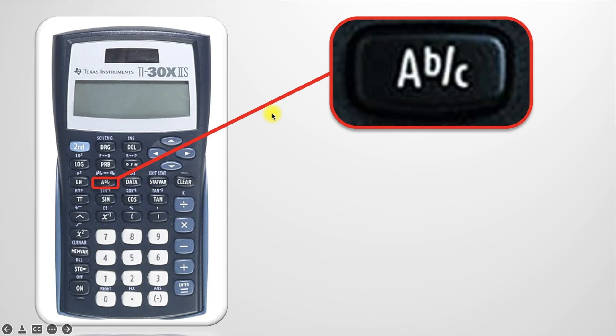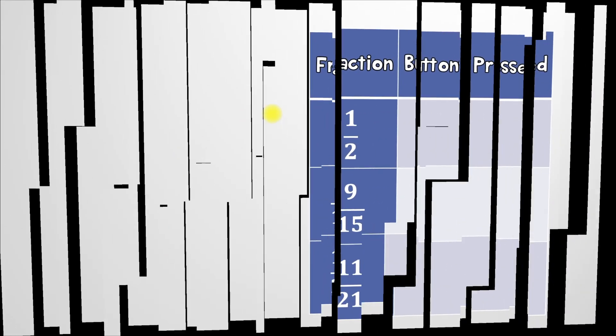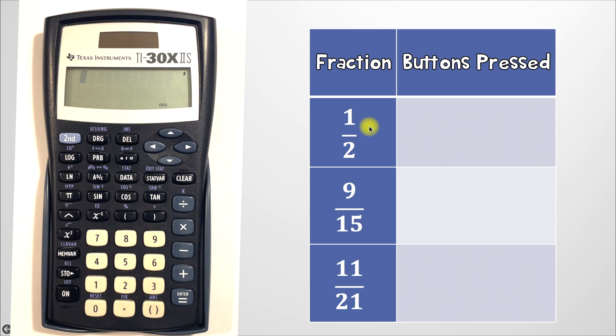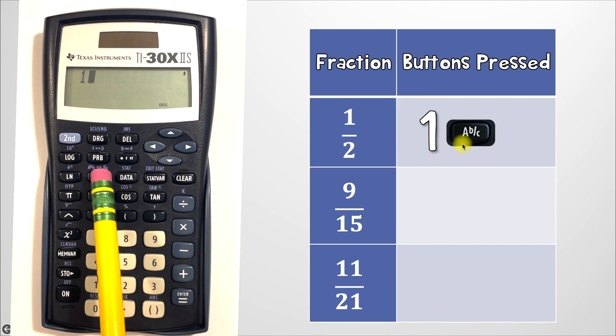So let's go over our first three examples. Let's go over this first example here 1 over 2. Since 1 is our numerator that's the very first thing we're going to press, the 1 key. After that because it's a fraction we're going to hit that ABC button located right here.